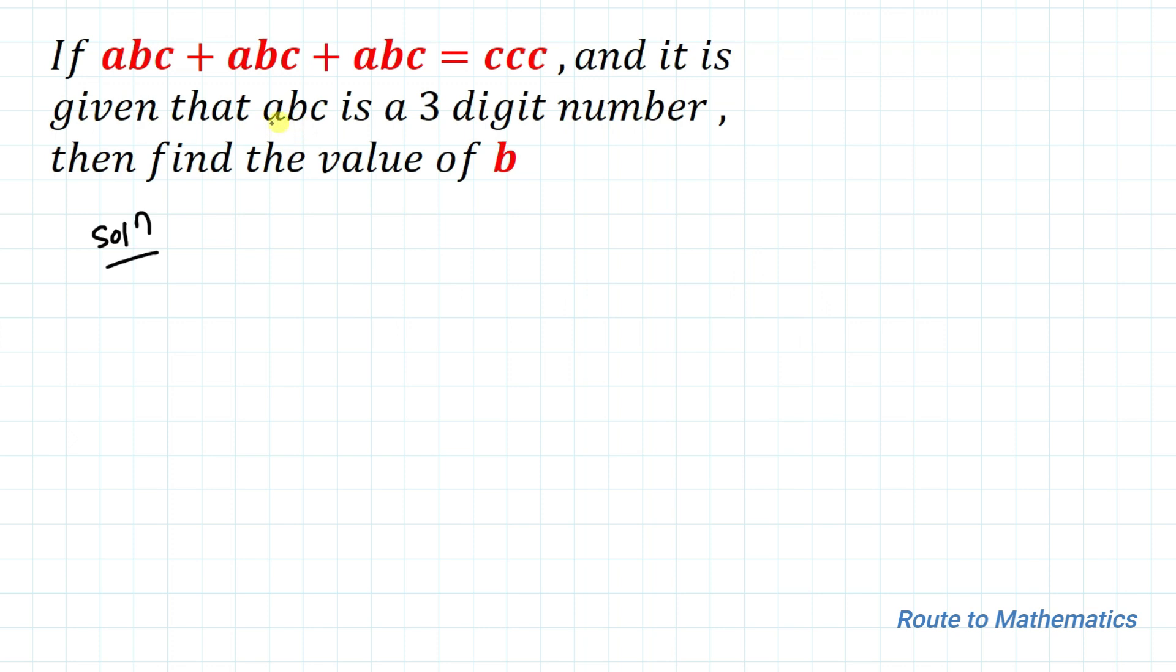In the first step, as it is given that ABC is a 3-digit number, we can say that the value of A must range from 1 to 9 and the values of B and C must range from 0 to 9. We have the equation ABC plus ABC plus ABC equals CCC.